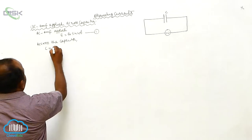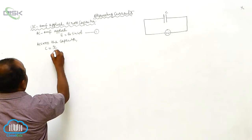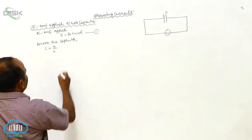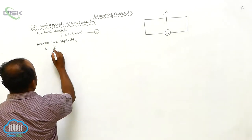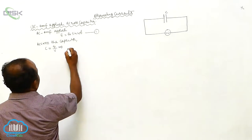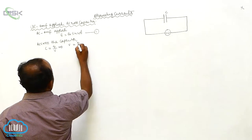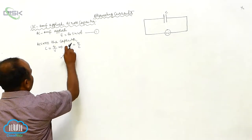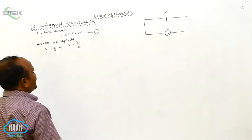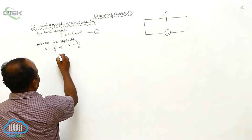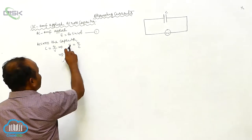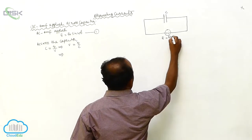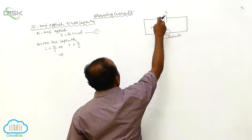Therefore C is equal to Q by V, which implies V is equal to Q by C. Now here the potential difference across the capacitor is equal to E, and E is equal to E-naught sin omega t, since only a pure capacitor is there.